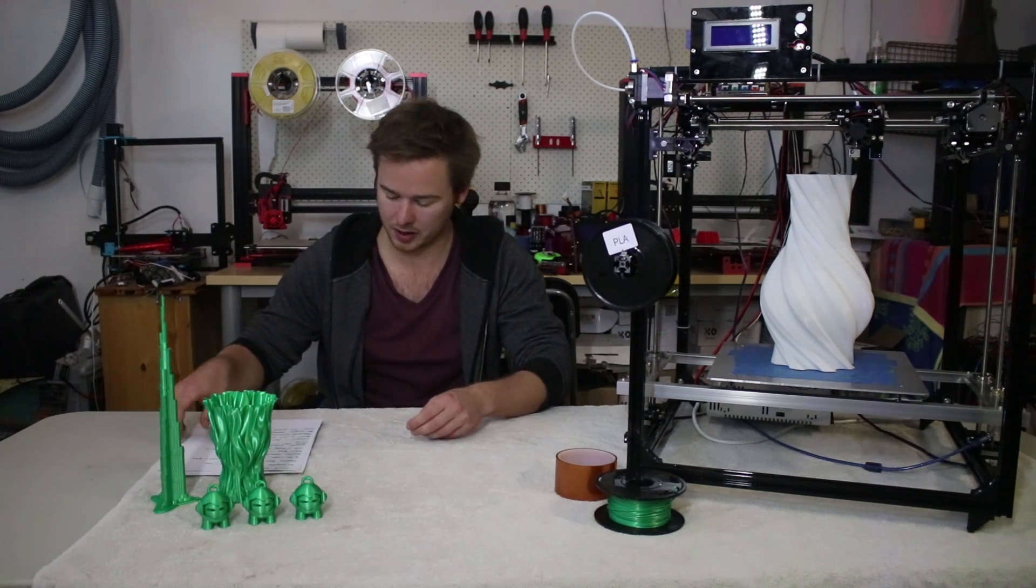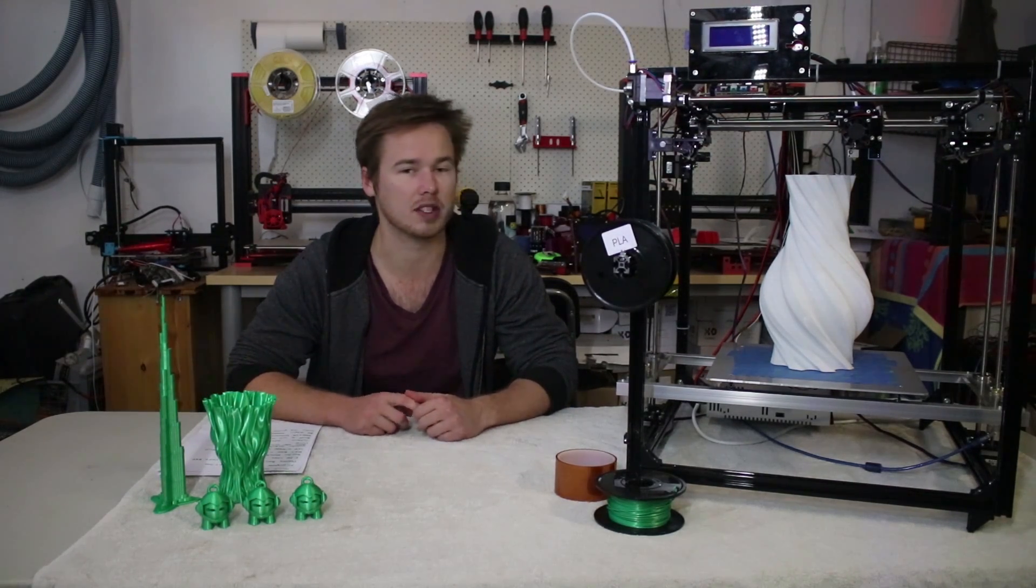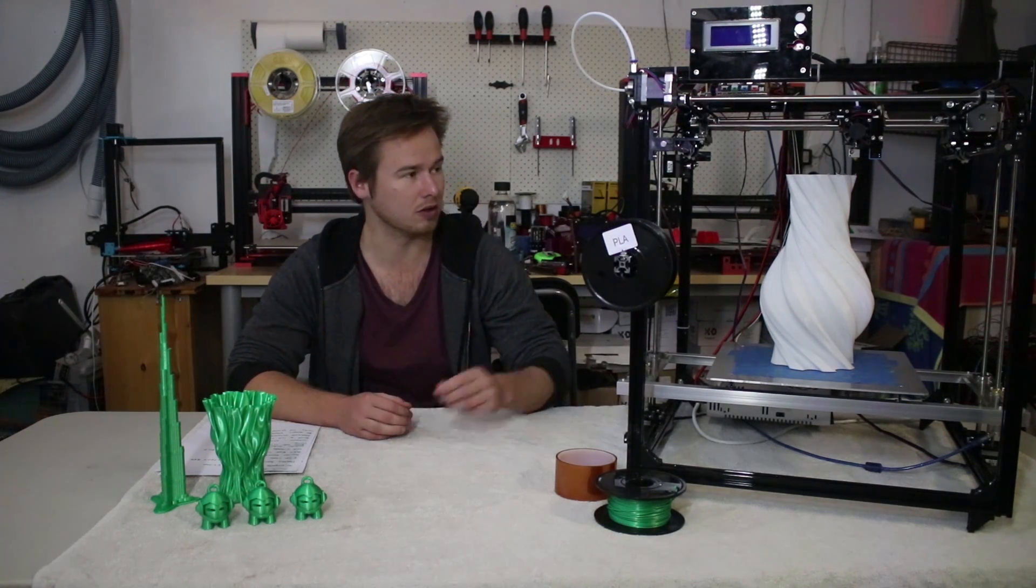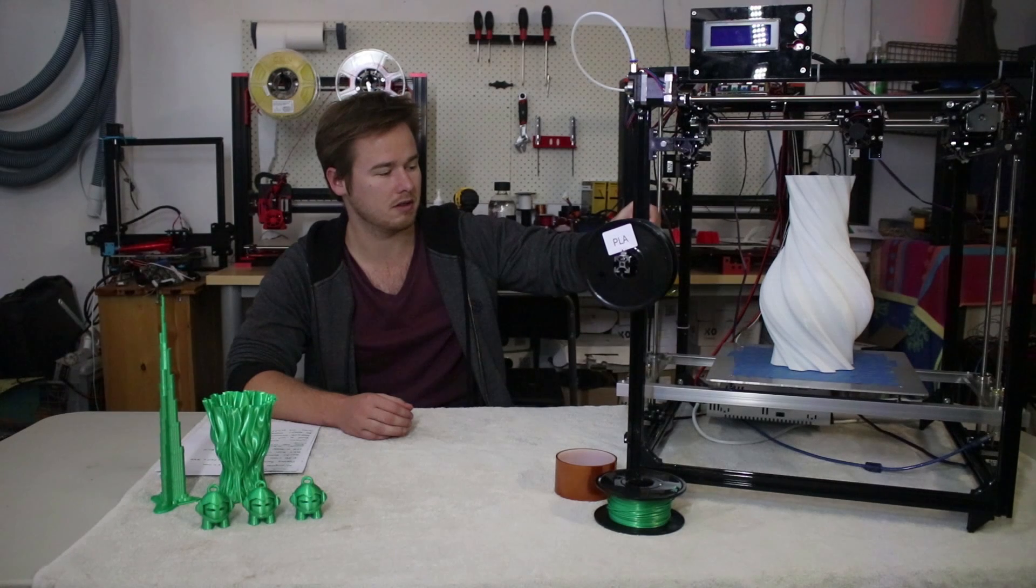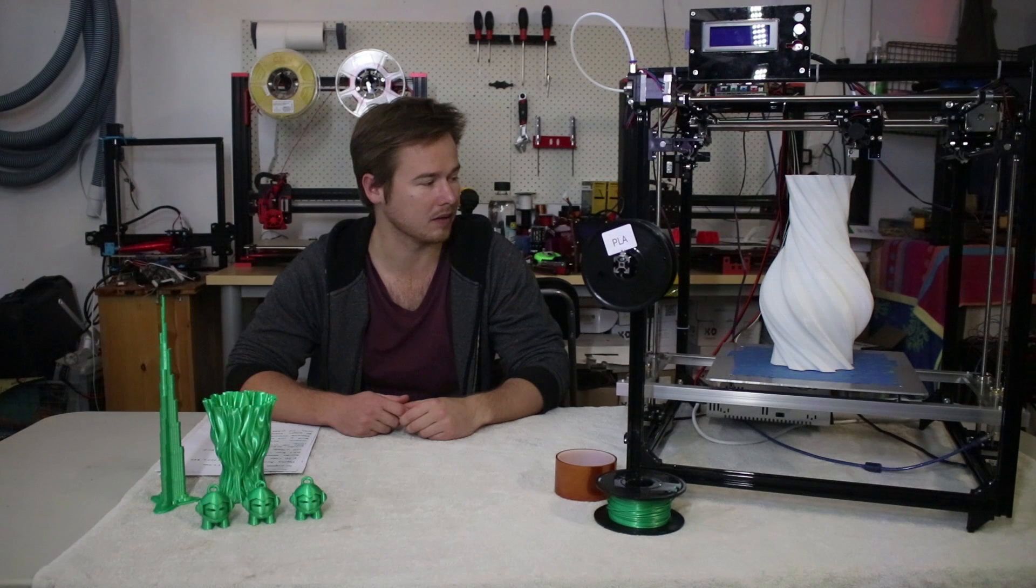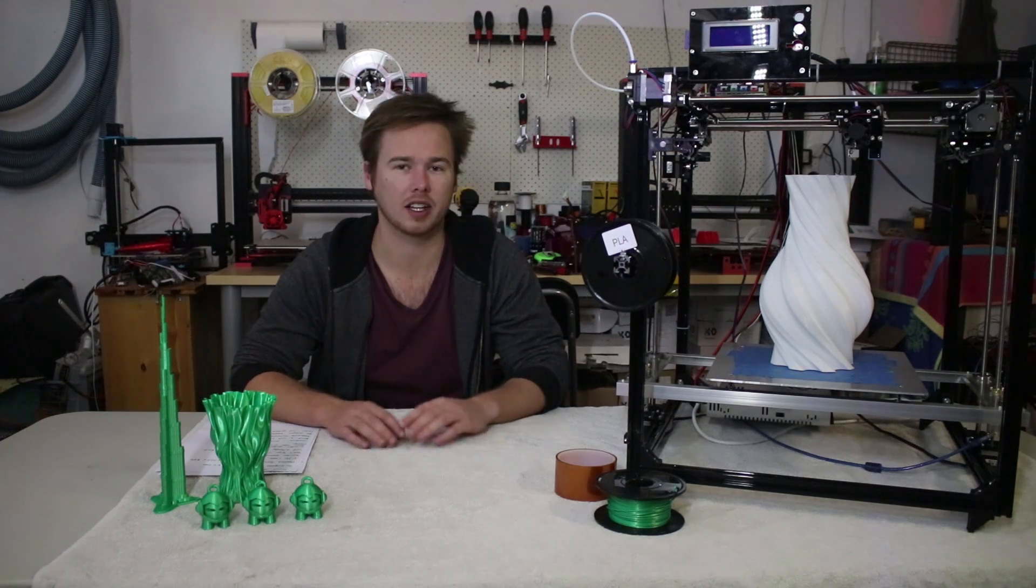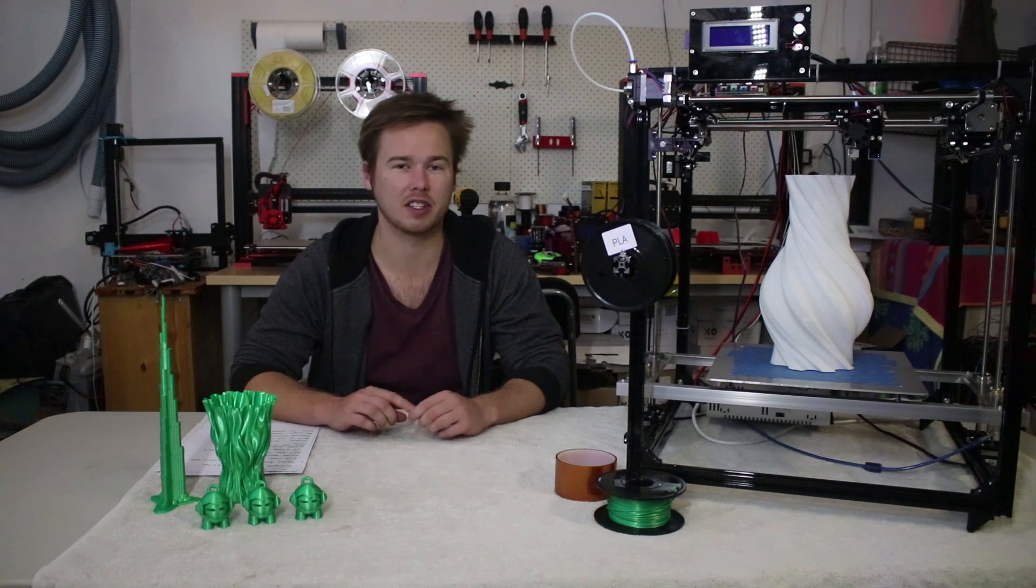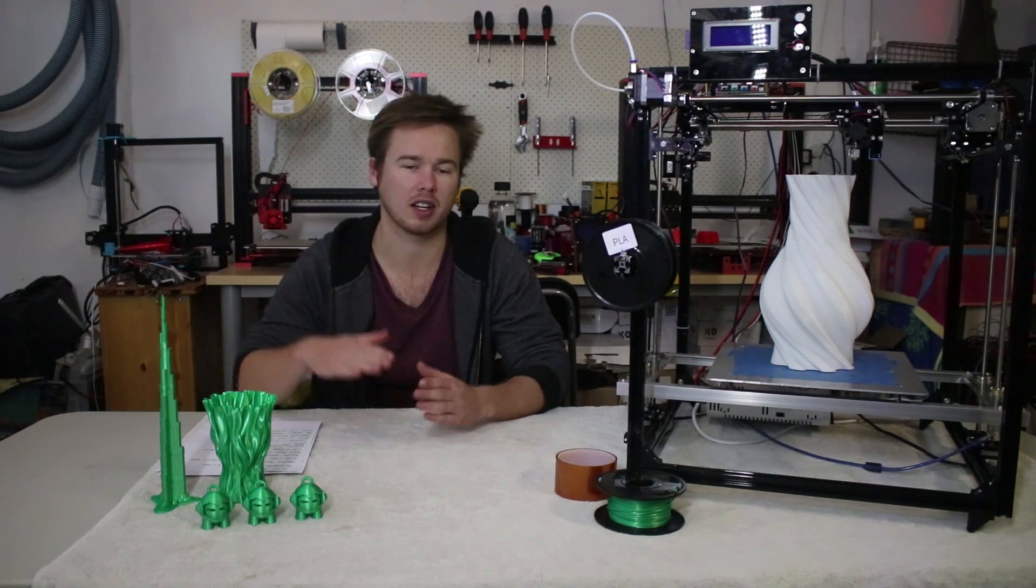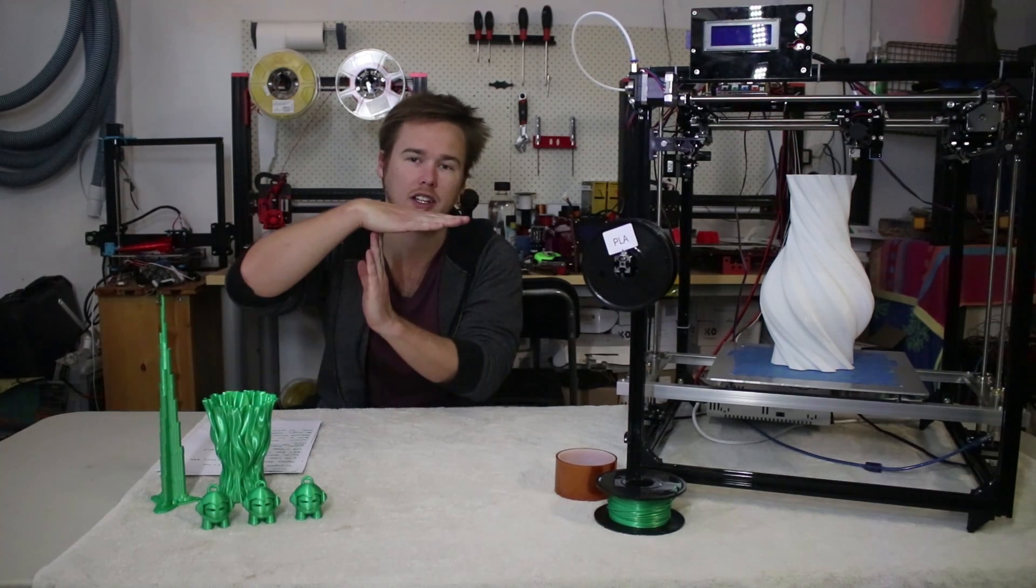So the design of it is a Cartesian printer. It uses the MakerBot style kinematics. It does have dual Z lead screws on either side, so one on either side of the print bed which is a feature that I liked. So that removes the cantilever design that normal cube printers use where they've only got the one lead screw and the bed just sits off at an angle.